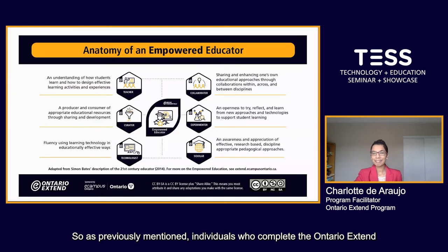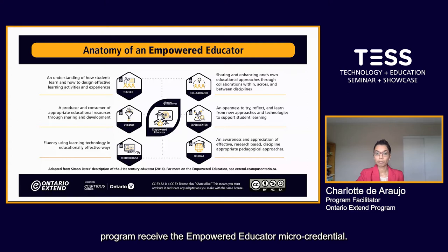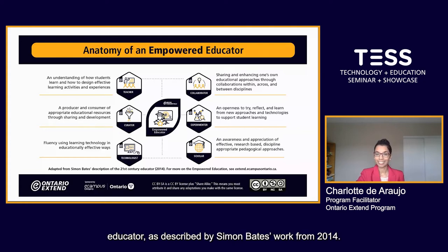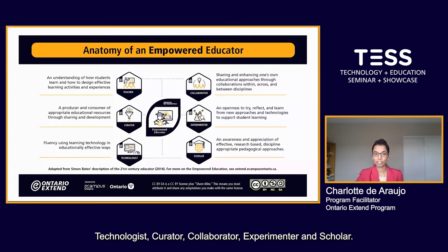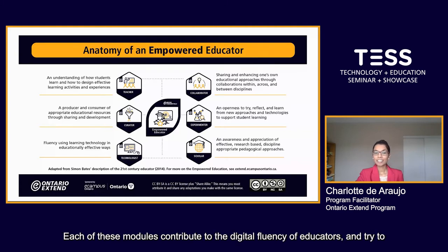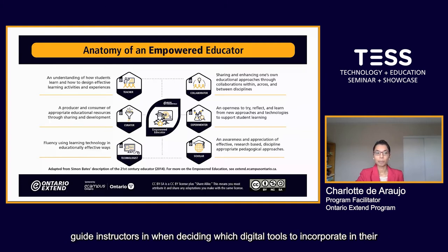Individuals who complete the Ontario Xtend program receive the Empowered Educator micro-credential. This program is based on the model of the anatomy of the 21st century educator as described by Simon Bates' work from 2014, supported by six modules represented by six hexagonal badges on the slide. These modules are the Teacher for Learning, Technologist, Curator, Collaborator, Experimenter, and Scholar. Each of these modules contributes to the digital fluency of educators and guides instructors in deciding which digital tools to incorporate in their teaching practice.